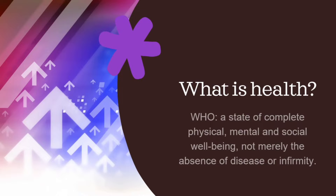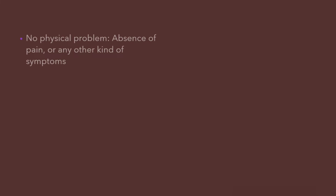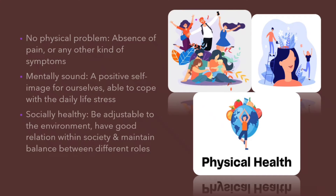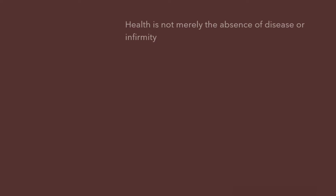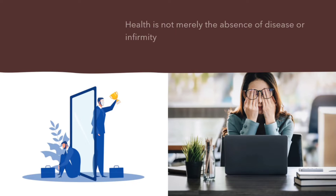We should be physically, mentally and socially healthy. There should be no physical problem, pain or any other kind of symptom. We should be mentally sound. We should have a positive self-image for ourselves in our mind, and we should be able to cope with the daily life stress. Socially, we should be adjustable to the environment we live in, have good relations within the society and maintain balance between the different roles we play. It's not that I don't have any disease or impairment, so I am healthy. Maybe I don't have any disease, but I have a headache which comes and goes every day, or I am not able to cope with the daily issues of my life. If I snap out frequently or I have antisocial behavior and cannot adjust in any environment, then I will not be considered as healthy.